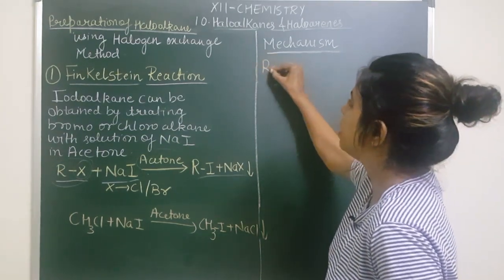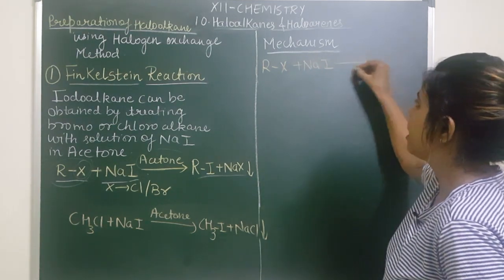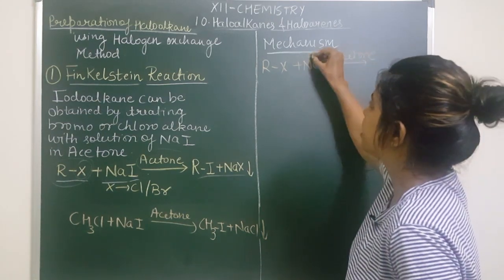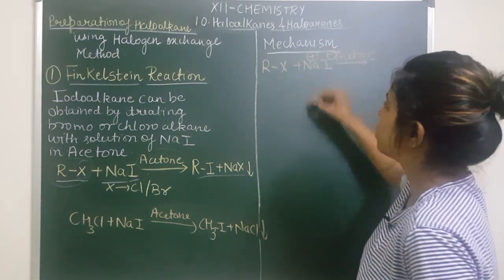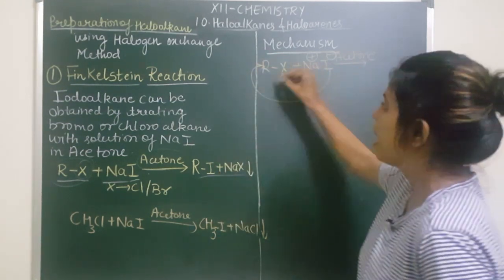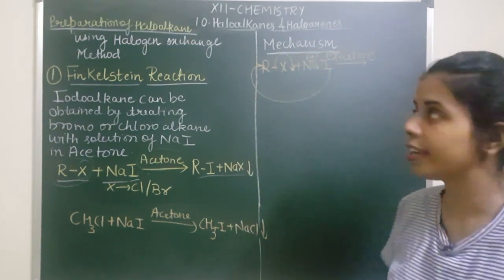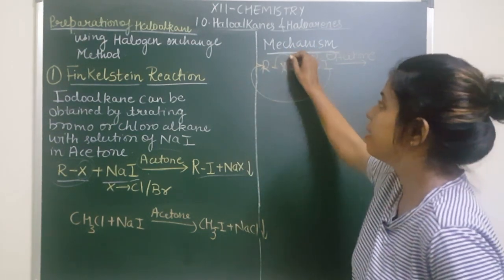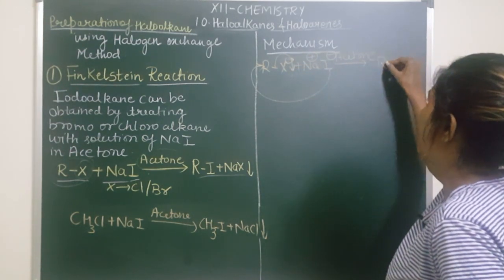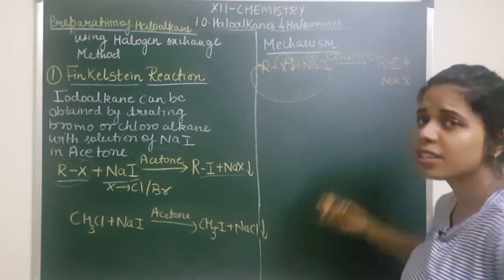The mechanism is very simple. You have your RX group. When you treat it with NaI in the presence of acetone as solvent, NaI dissociates into Na⁺ and I⁻. The I⁻ is attacking on the R group from the back side — this is an SN2 mechanism. As I⁻ attacks from the back side, X⁻ is leaving. This X⁻ combines with Na⁺ to give NaX as a byproduct.